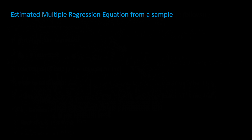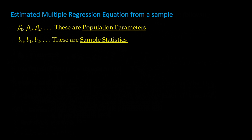As we did in the past, we will use a sample to develop an estimated multiple regression equation using the least squares method. Since the population parameters of beta-naught, beta-1, beta-2, etc. are not known, we will need to use sample statistics to estimate these population parameters. The sample statistics would use B instead of beta, so we would have B0, B1, B2, and so on. When you see the Greek letter beta, it is always referring to a true population parameter. Since we don't know the true population parameters, we take a sample and get sample statistics using lowercase non-Greek letters B0, B1, and so on.